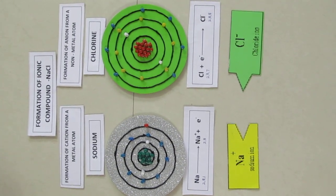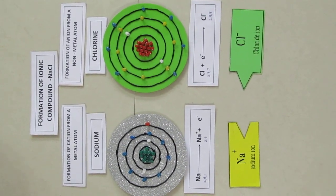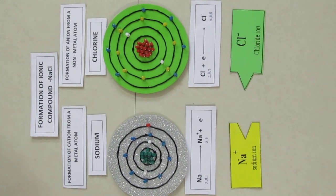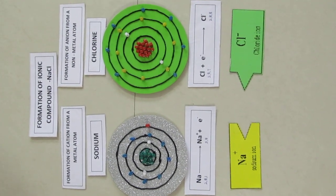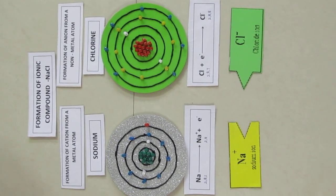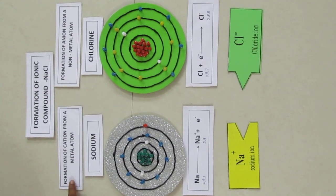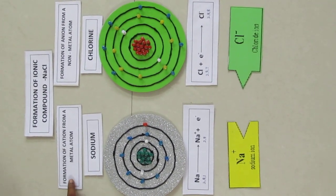Step 1: Formation of cation. Step 2: Formation of anion. Step 3: Association of anion and cation. First let us see formation of cation from a metal atom.